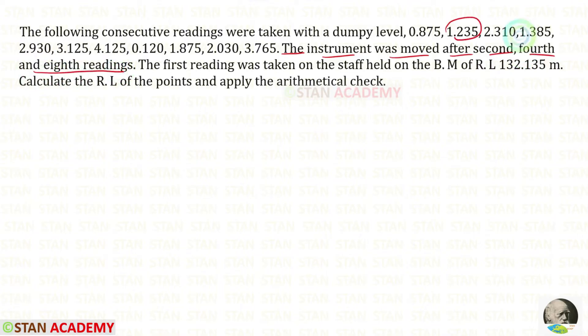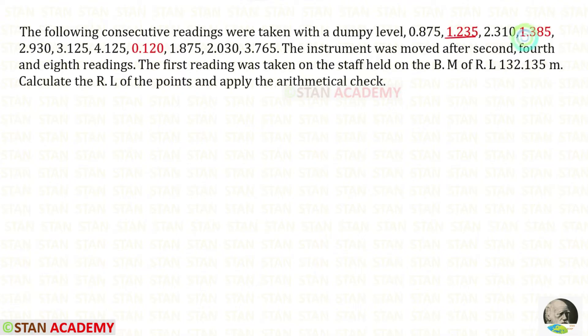The instrument was moved after the second, fourth, and eighth readings. We need to mark these readings differently. You can see that I have given different colors to those readings. These readings will be the foresight. Also, we know that the last reading will be the foresight. So totally there are four foresights.